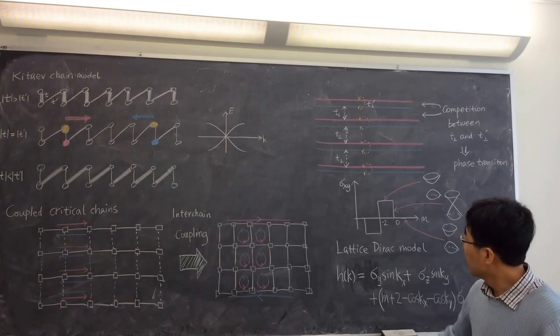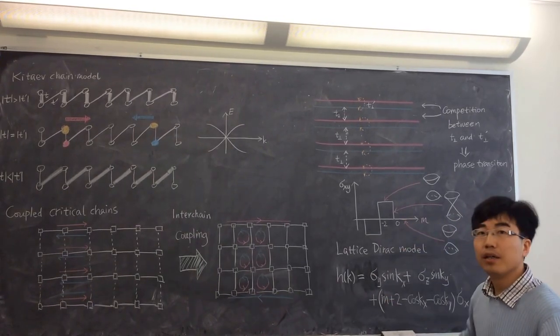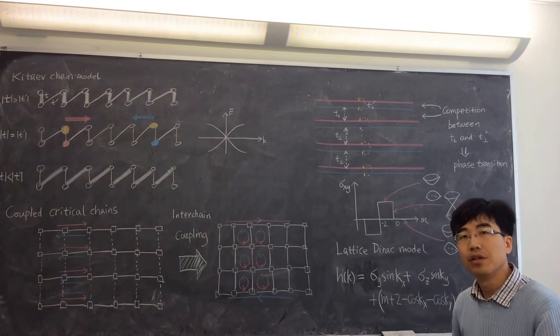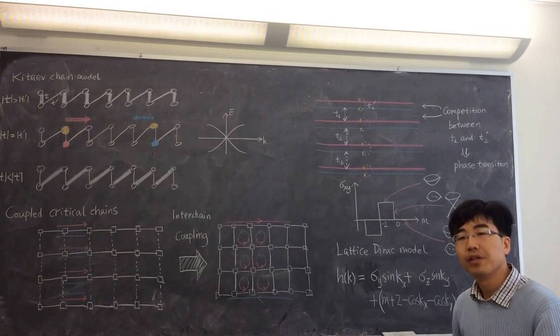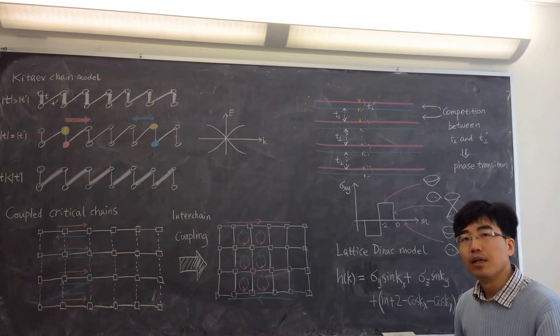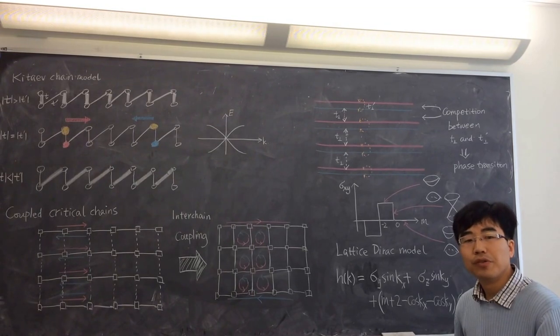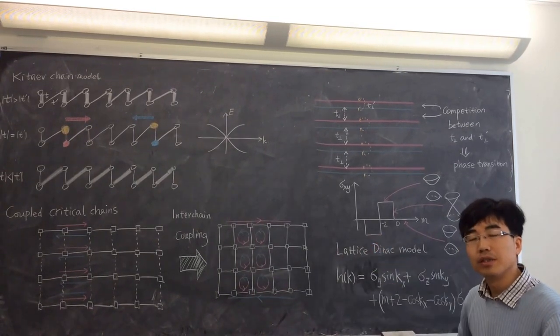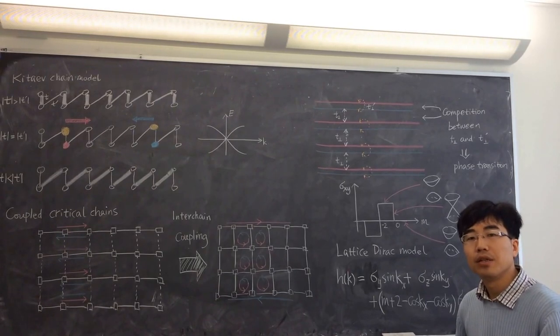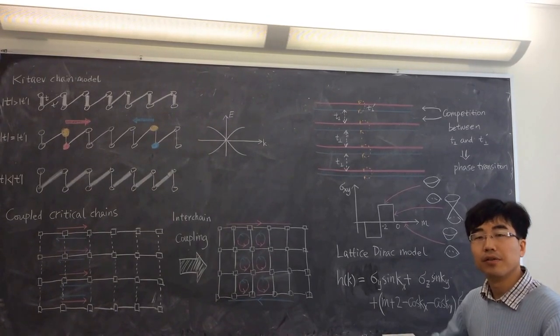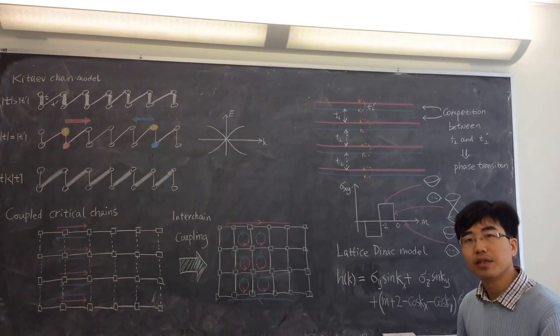So then that Dirac fermion actually describes a lot of critical behaviors in the quantum Hall system. And also it allows you to go on with this construction and couple these critical states together and form a higher dimensional topological state.